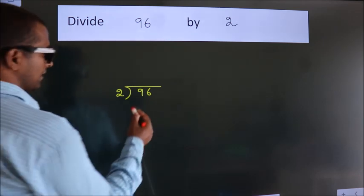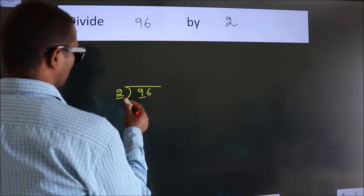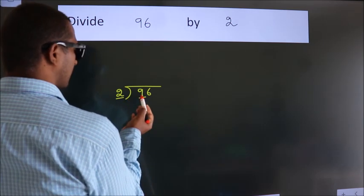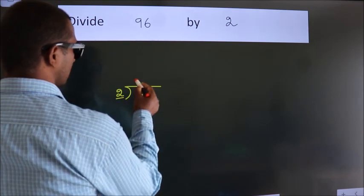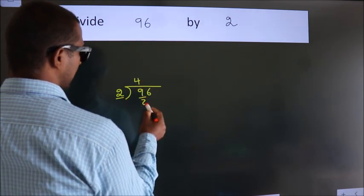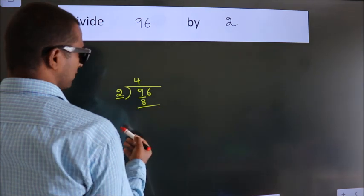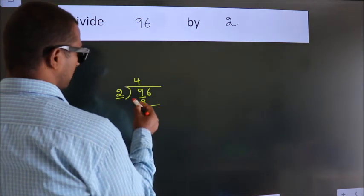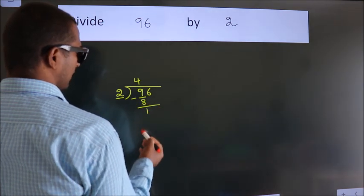Here we have 9, and here 2. A number close to 9 in the 2 times table is 2 fours, which is 8. Now we should subtract. We get 1.